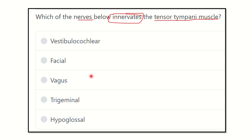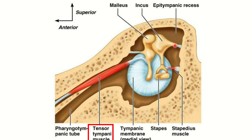We will find out which nerve gives innervation to the tensor tympani muscle. Here we can see the middle ear cavity and the Eustachian tube, also called the pharyngotympanic tube. The anterior and posterior sides are visible, and we can see the three important ossicles: malleus, incus, and stapedius. This muscle here is the tensor tympani muscle, which attaches to the malleus.